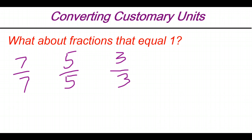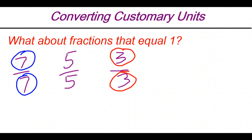We could go on forever. But the key part of a fraction that is equal to 1 is that the numerator and the denominator have to represent the exact same value. So 3 and 3, because they're the same thing, represent the same value — 3 over 3 is the same as 1. 7 and 7 obviously represent the same value, so 7 over 7 equals 1. Now pause the video and see if you can come up with other ways of creating fractions where the numerator and denominator represent the exact same value, with more than one number in the numerator and denominator.